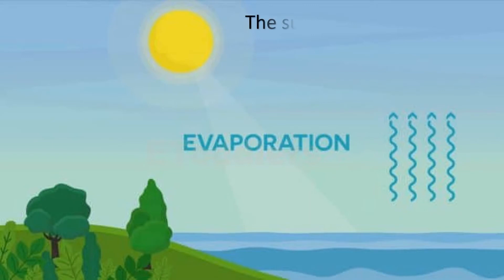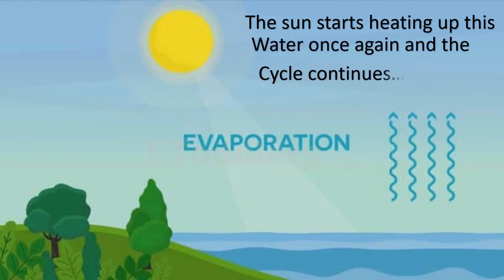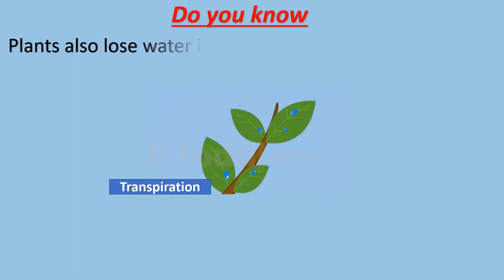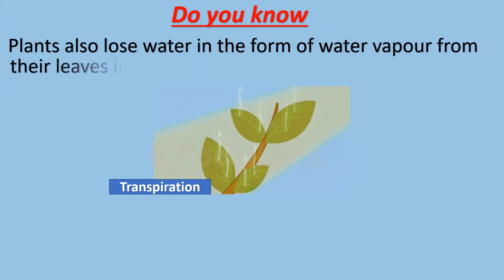The sun starts heating up this water once again and the cycle continues. Do you know, plants also lose water in the form of water vapor from their leaves into the air by the process of transpiration. The four steps of water cycle.